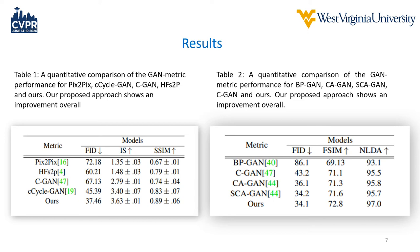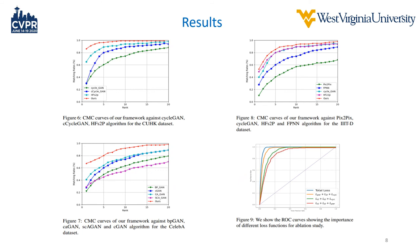Our results include a quantitative comparison with other techniques that are quite popular: pix2pix, CycleGAN, CGAN, and HF2P. Our results show considerable improvement in FID and SSIM scores respectively. We also did the same comparison for BP-GAN, CA-GAN, SCA-GAN, and CGAN. All of these are clearly explained in our paper.